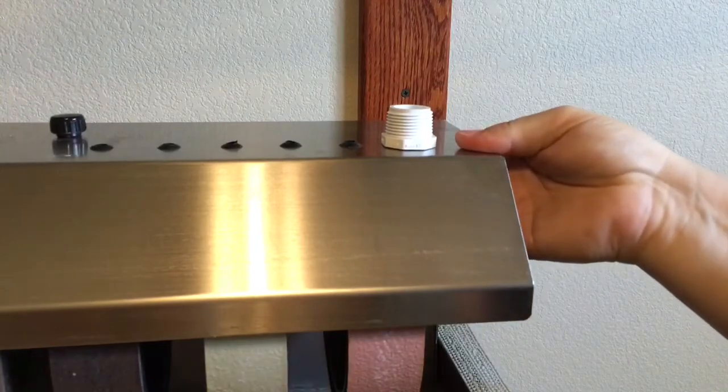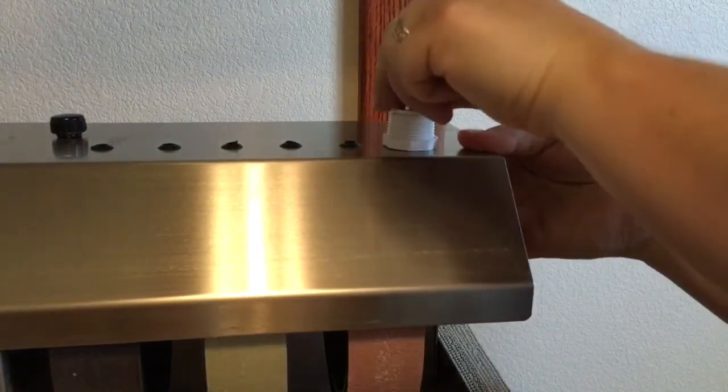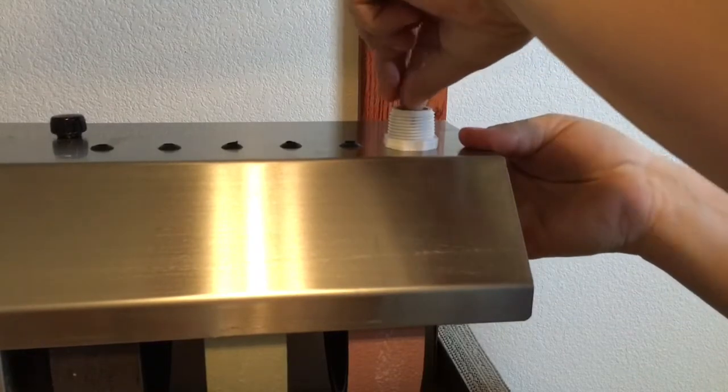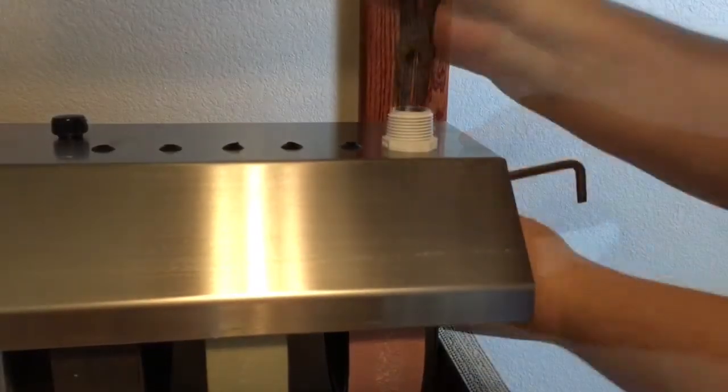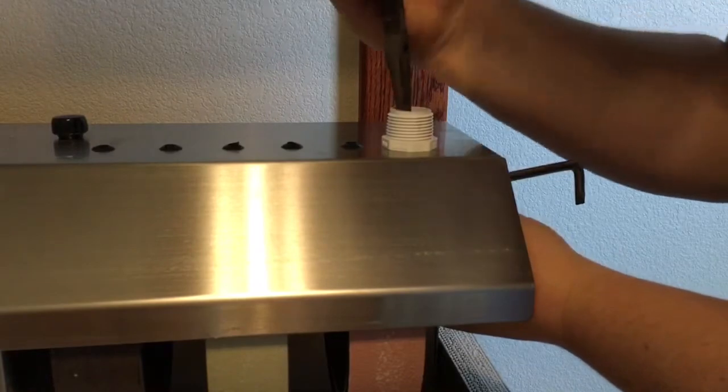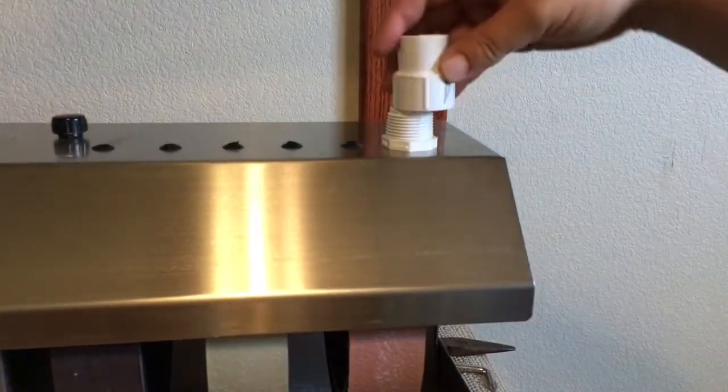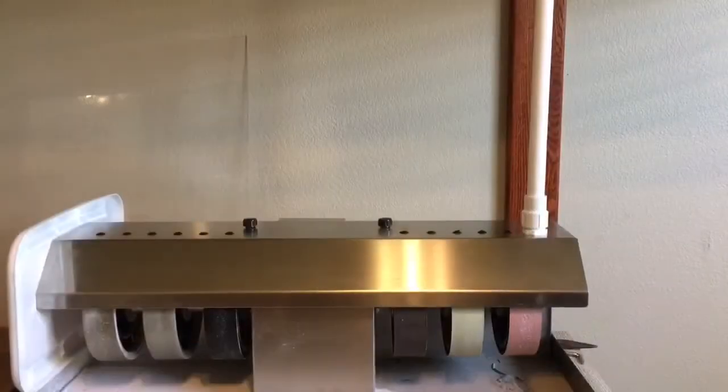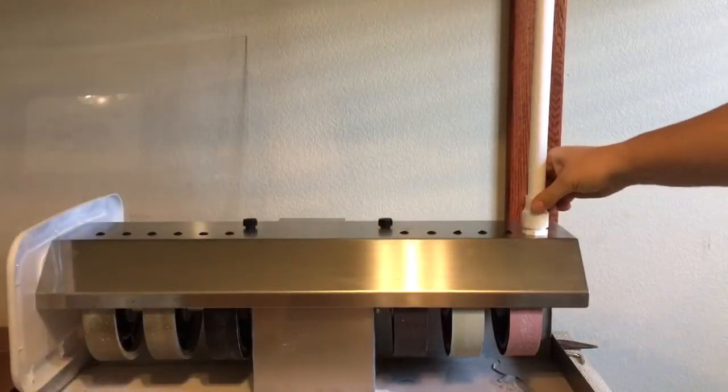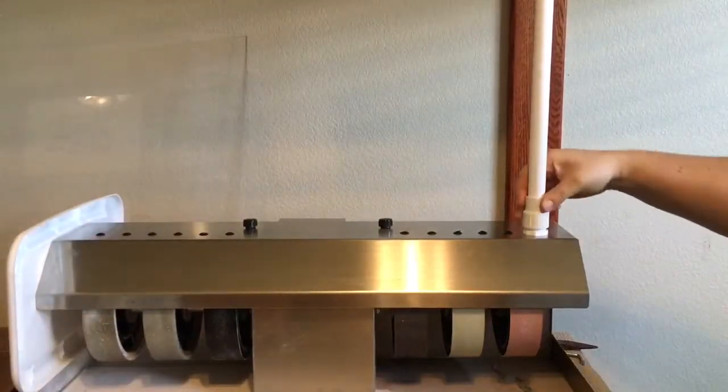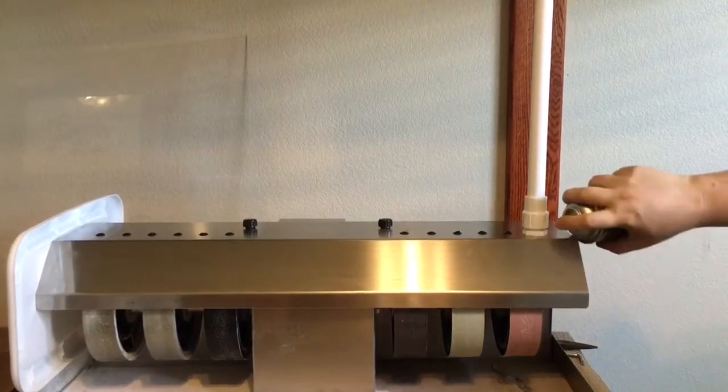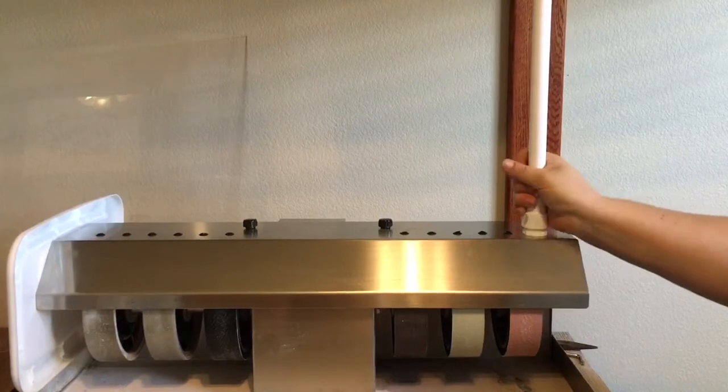You can either use a lock washer or you can use a locking nut. A lock washer is a little easier because you can thread your nut on a lot faster. Thread this piece on. Once this is threaded together, that will give you your pivot point. You can also spray a little bit of Break Free or WD-40 inside of that and it will pivot a lot nicer.